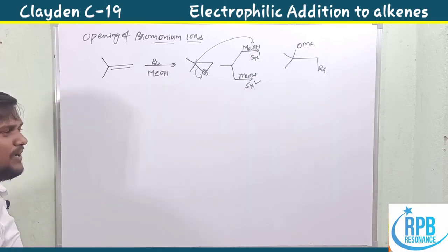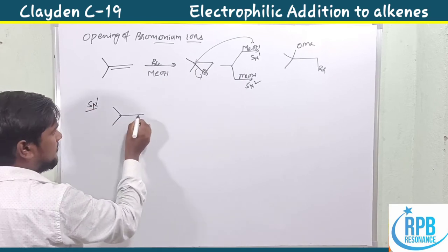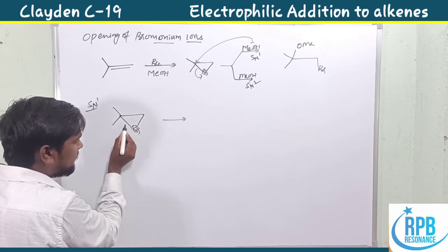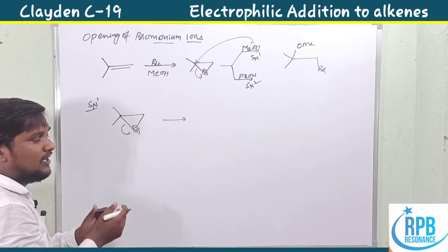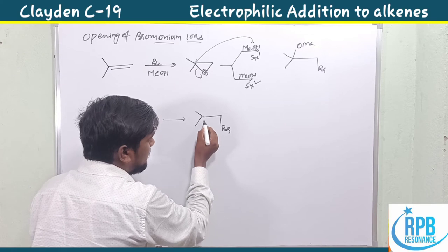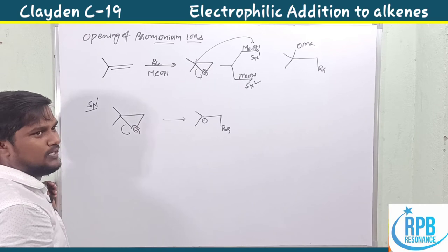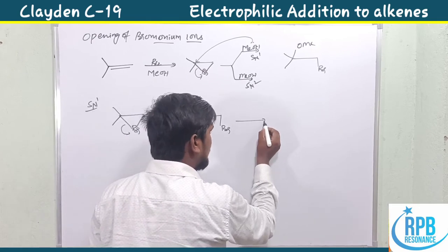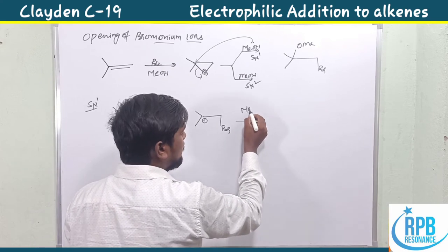First, consider SN2 mechanism: the bromonium ion cleaves one of the carbon bonds due to formation of a more stable carbocation — a tertiary carbocation rather than a primary one. Because the tertiary carbocation is more stable, this side opens. After opening of the halonium ion, the nucleophile attacks the electrophilic center.